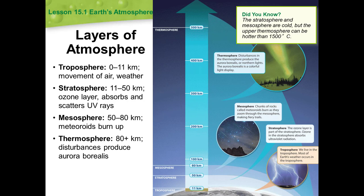Next, we are going to discuss layers of the atmosphere. The main layers of the atmosphere are the troposphere, stratosphere, mesosphere, and thermosphere. Earth's atmosphere is divided into these four main layers primarily on the basis of changes in temperature.